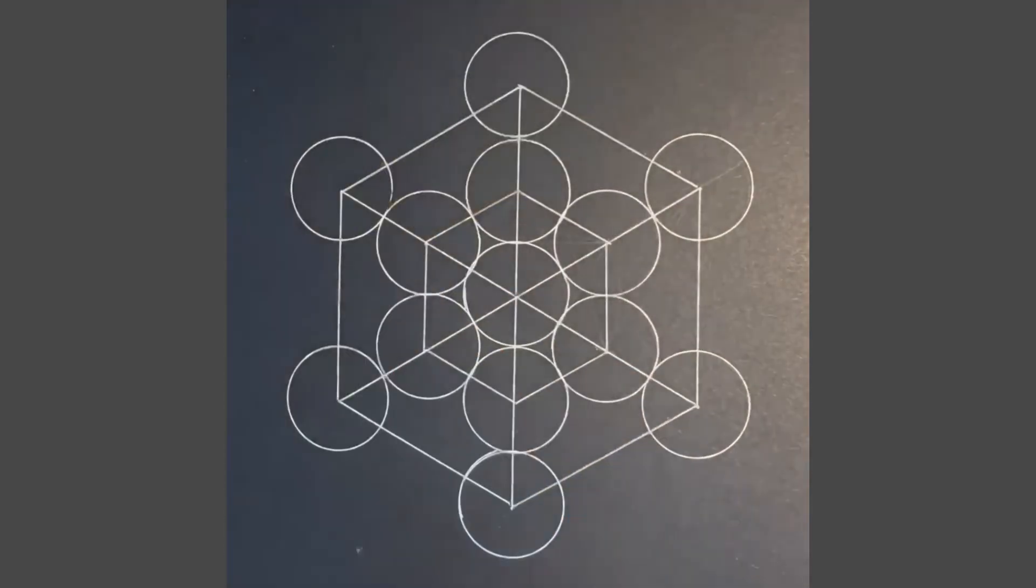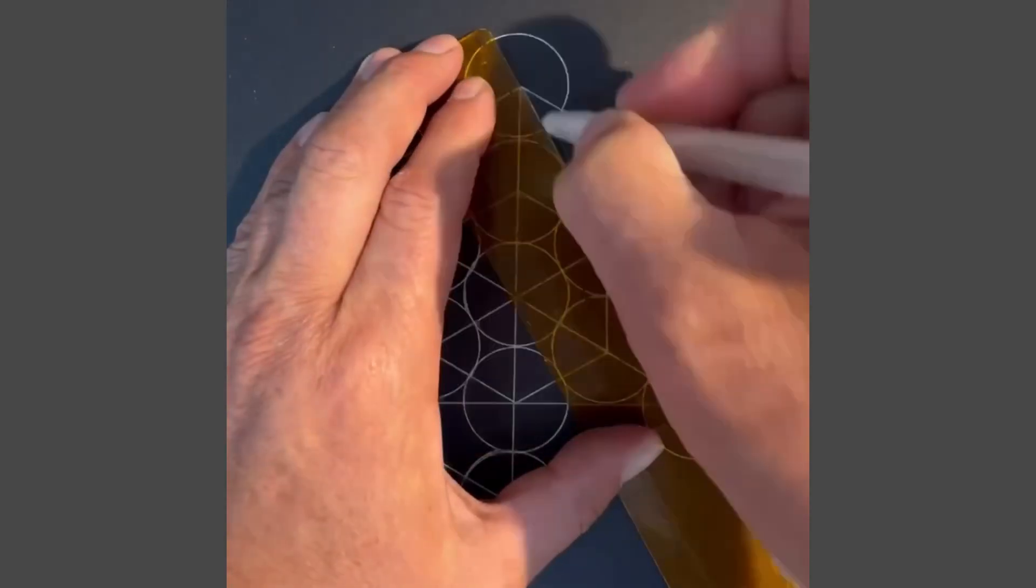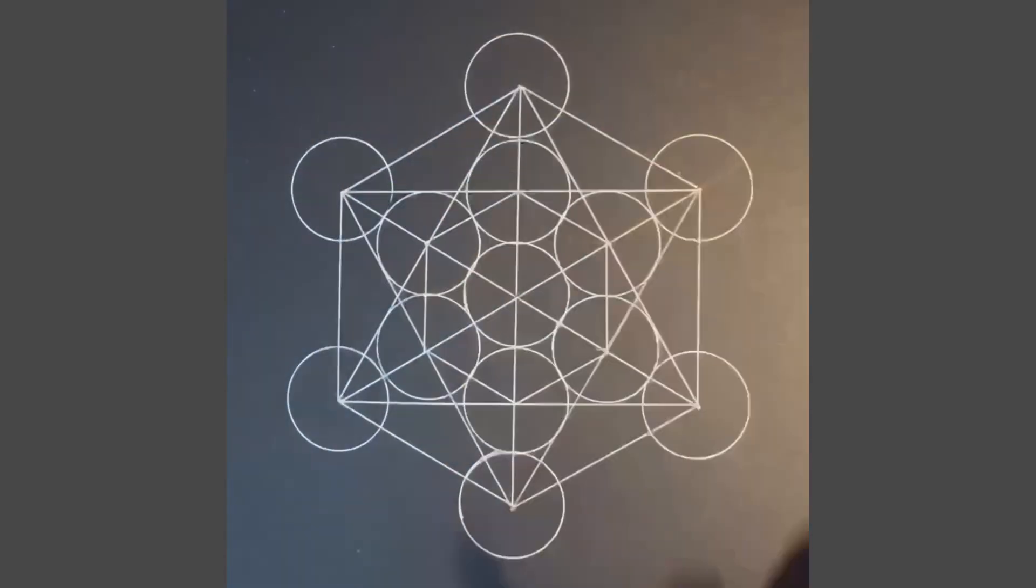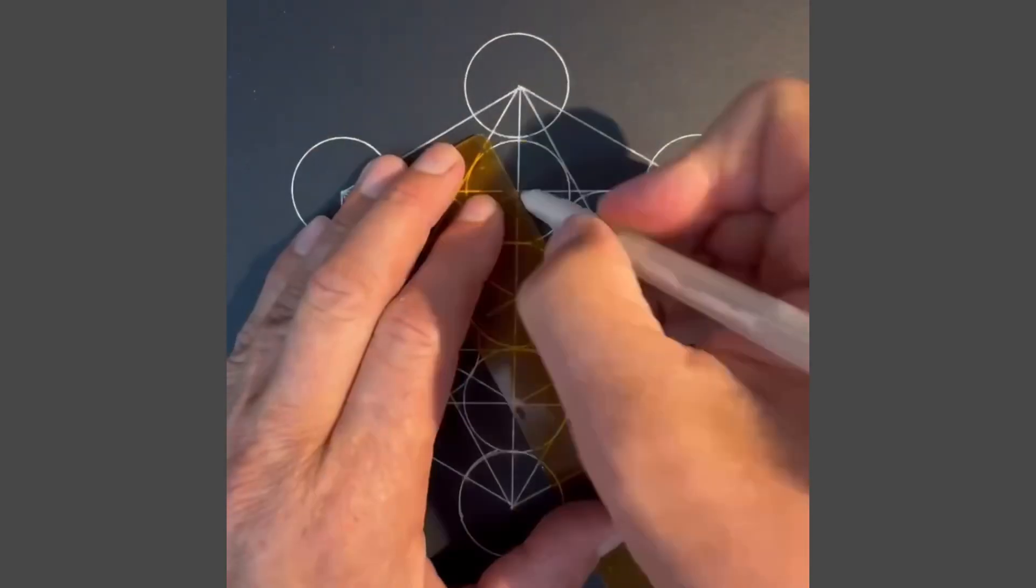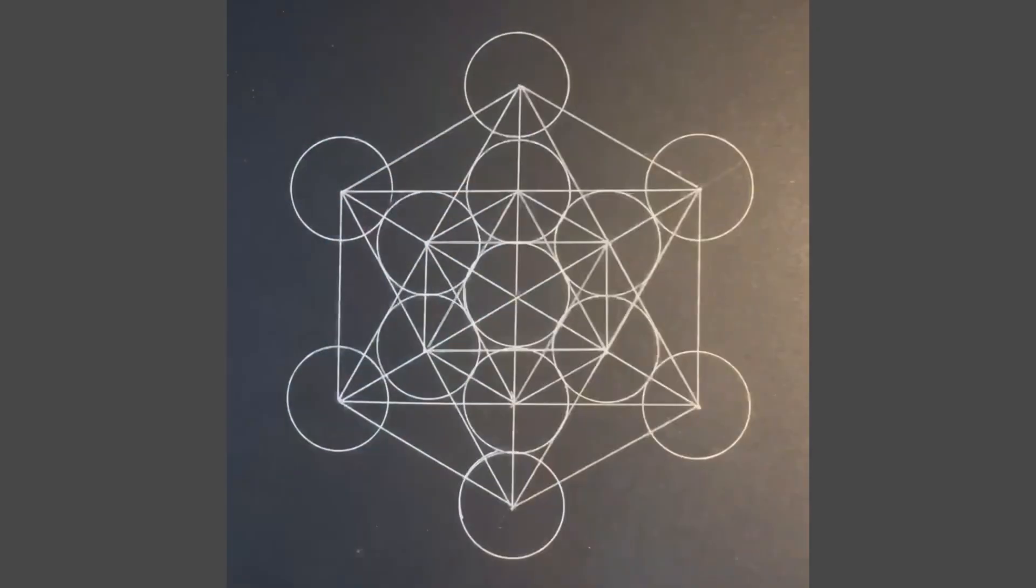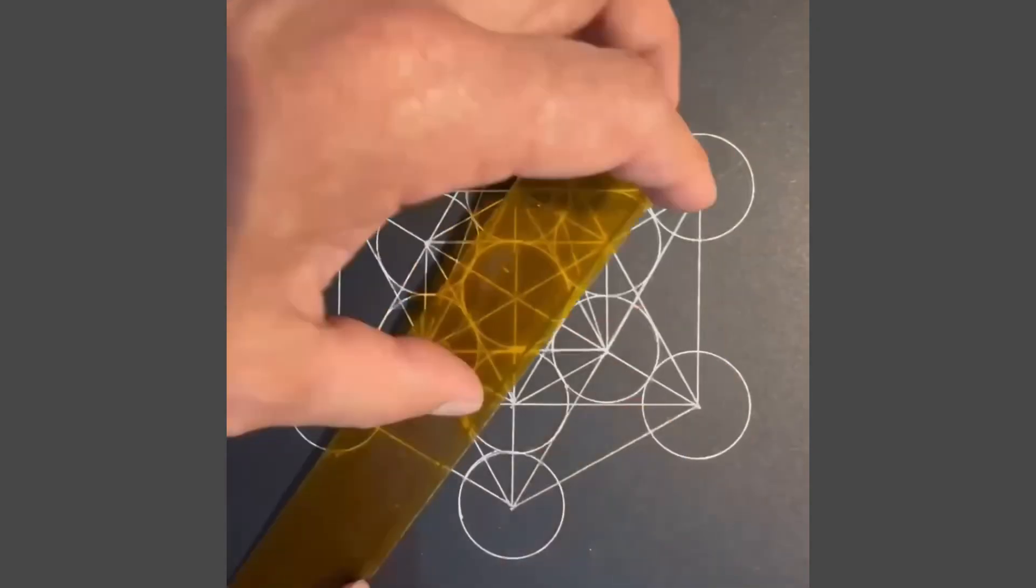You can see you create a hexagon with a smaller hexagon inside, then you get an equal triangle, an equal triangle facing down, a smaller triangle in the center and a smaller triangle facing down.